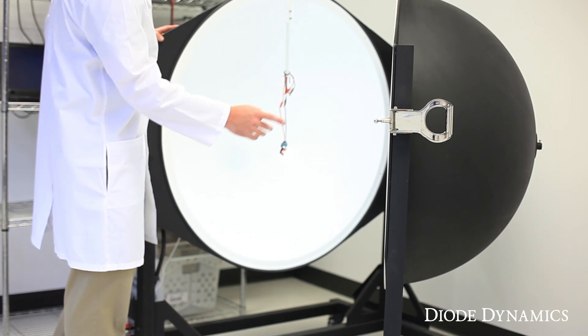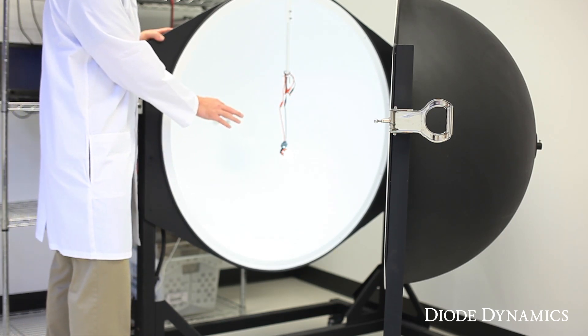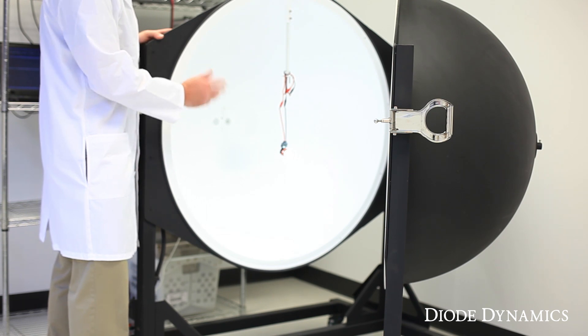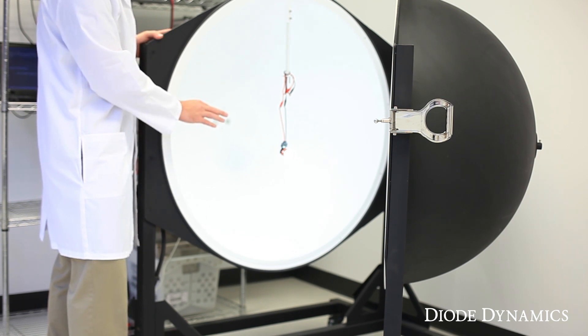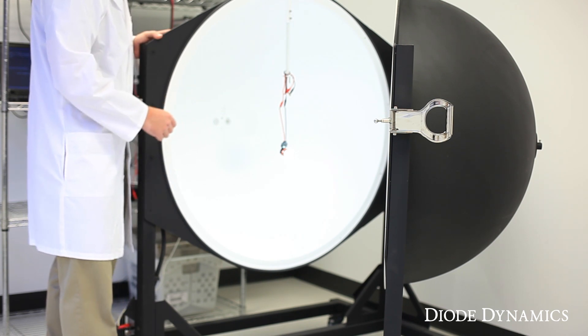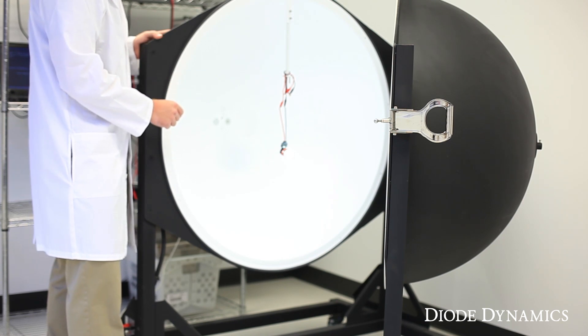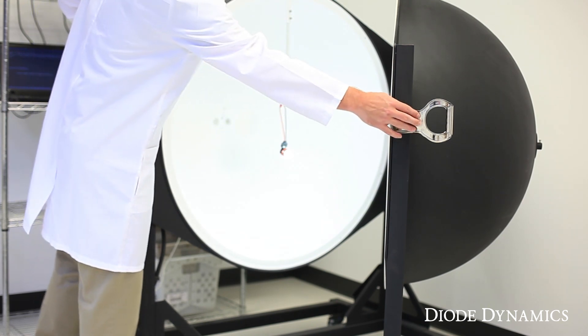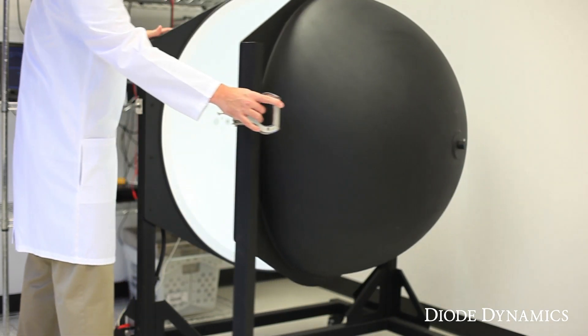Okay, before we close the integrating sphere, we want to make sure that this bulb is fully heated up. LED bulbs are going to get hot as they run and decrease in brightness. At Diode Dynamics, we always make sure the bulbs are fully warm before testing them in order to get good results. So the lumen figures from us are after the bulb is fully heated up. Now that we've positioned it properly, we can get it closed and start measuring.